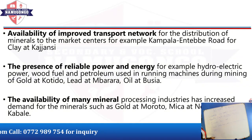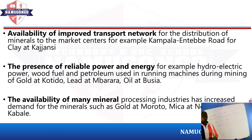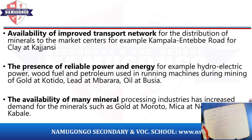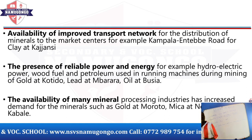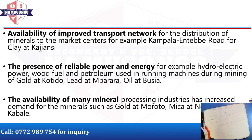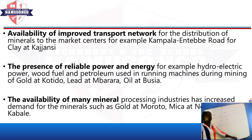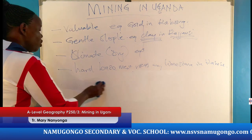We also have availability of improved technology — machines that help with drilling oil and mining gold. Then there is availability of an improved transport network that helps miners transport minerals from mining centers to the market. There is also the presence of power and energy used in the smooth running of machines as they drill oil, mine copper, or mine limestone — for example, solar, biomass, and biogas depending on the mineral being mined. Finally, there is the availability of many mineral deposits, as shown across the different areas on our sketch map.